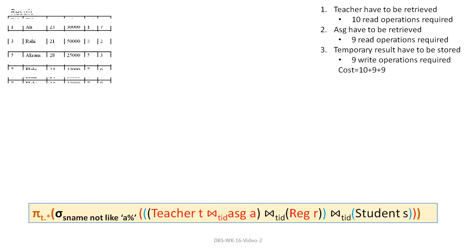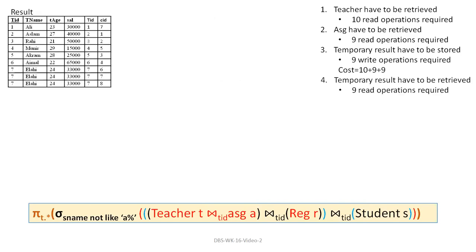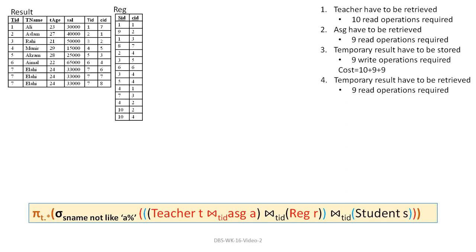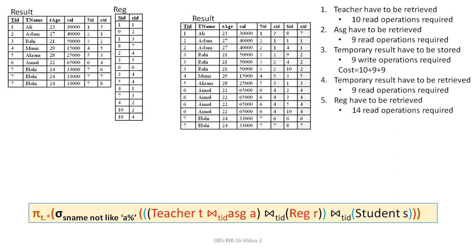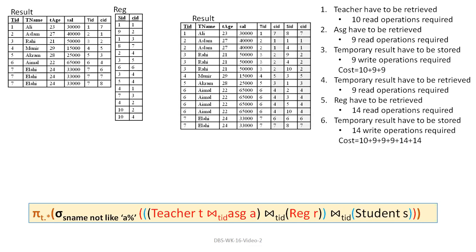After this, we read the result and join it with the Reg relation. The result requires 9 read operations. Reg has 14 rows, so 14 read operations. After joining, the result has 14 records — so 14 write operations. The cumulative cost is now: 10 + 9 + 9 + 9 + 14 + 14.